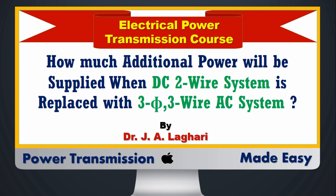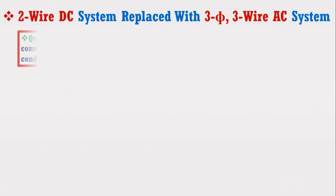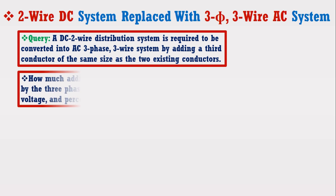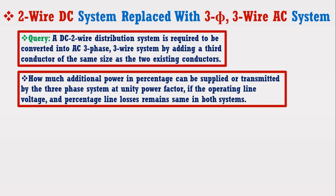This is a very interesting topic. Before going to solve it, just consider the theory as below. Suppose a DC 2-wire distribution system is required to be converted into an AC 3-phase 3-wire system by adding a third conductor of the same size as the two existing conductors. How much additional power in percentage can be supplied or transmitted by the 3-phase system at unity power factor, if the operating line voltage and percentage line losses remain the same in both systems?